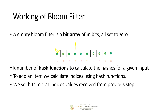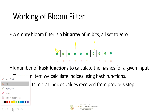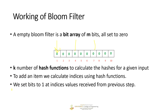So initially my array had all zeros. After getting outputs 1, 4, and 7, bit number 1, bit number 4, and bit number 7 will be set to 1.